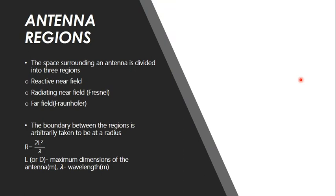Now let us go to a more in-depth classification of the region surrounding an antenna. The near field can still be divided into two types: the reactive near field and the radiating near field. In the reactive near field region we cannot observe any radiations. It is the region immediately surrounding the antenna where it is highly reactive in nature. If any other component is brought closer to the antenna, it tries to dissipate the total energy to that particular device.